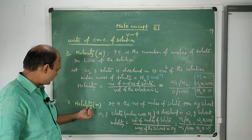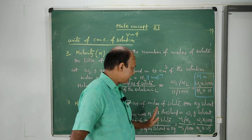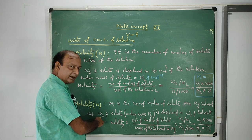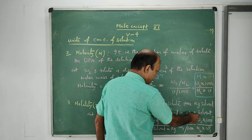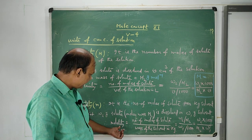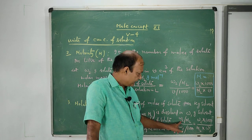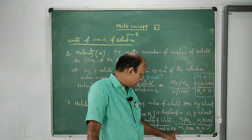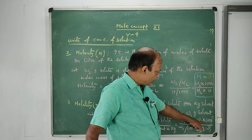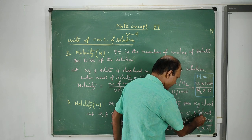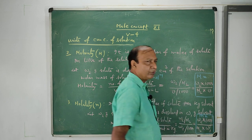The next unit is molality, denoted by small m. It is the number of moles of solute per kg of solvent. W2 gram of solute with molar mass M2 gram per mole is dissolved in W1 gram of solvent. By definition, molality equals to number of moles of solute by mass of the solvent in kg. Number of moles of solute equals to W2 by M2, and mass of solvent W1 gram converted to kg is W1 by 1000. Therefore, molality equals to W2 into 1000 by M2 into W1.